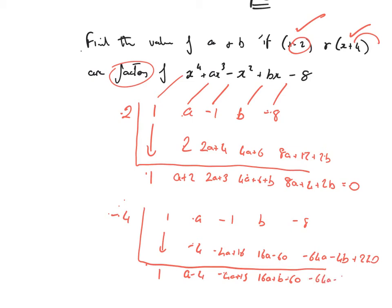And then it's minus 64a minus 4b plus 240 minus 8. So, that's going to be minus 64a minus 4b plus 232, equal to 0.